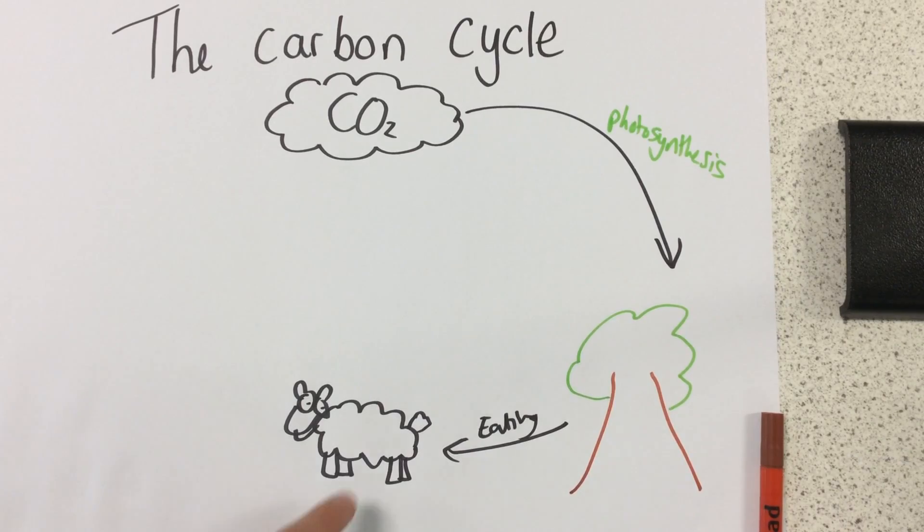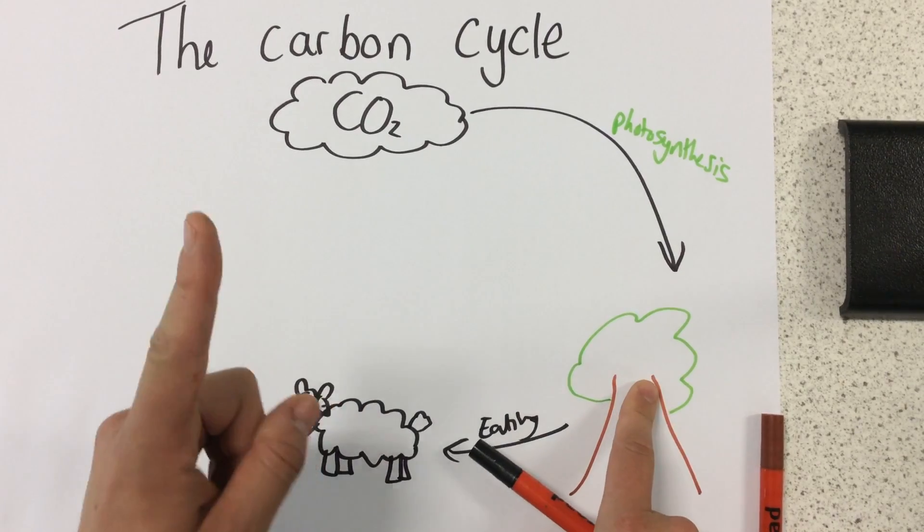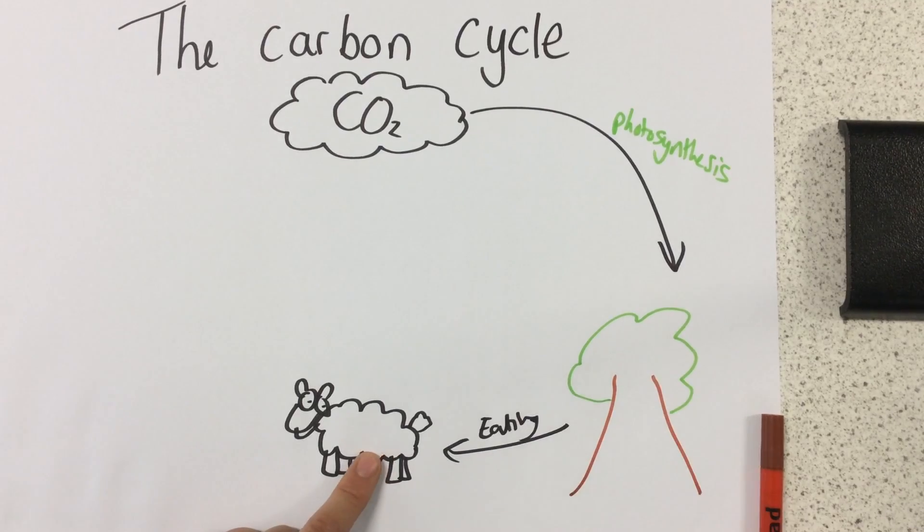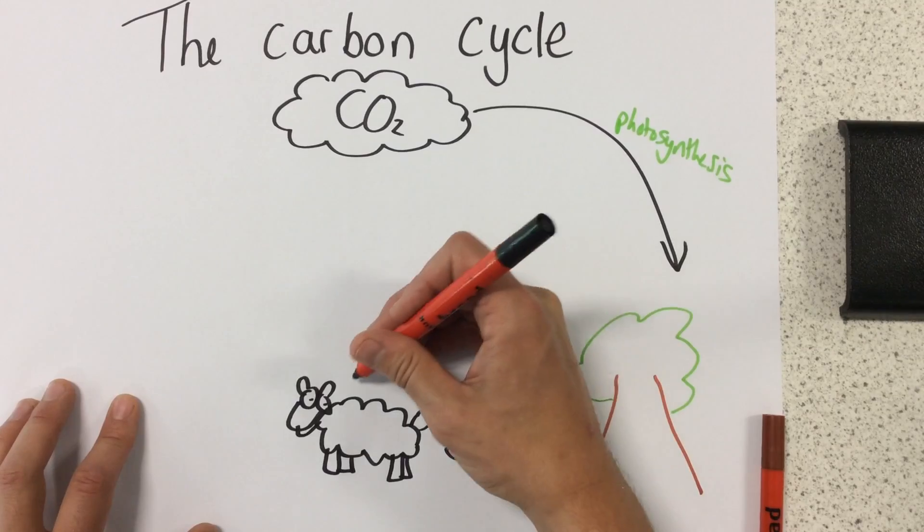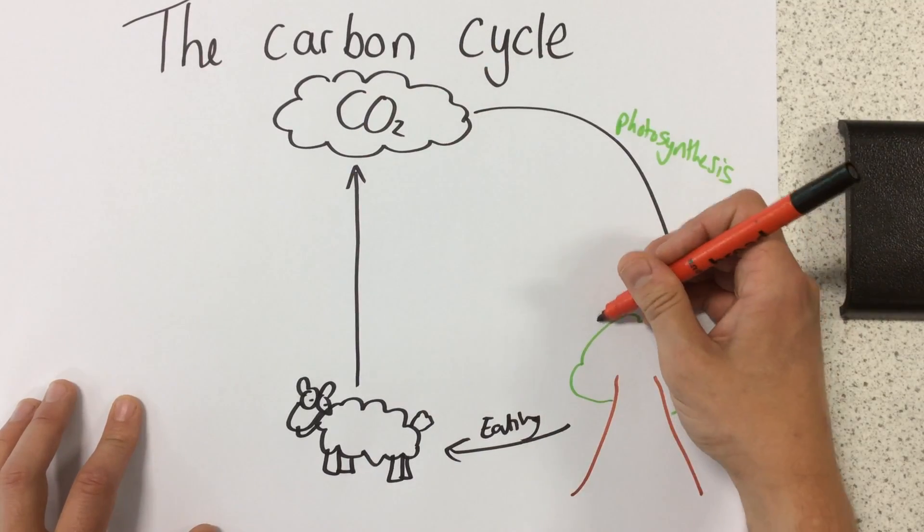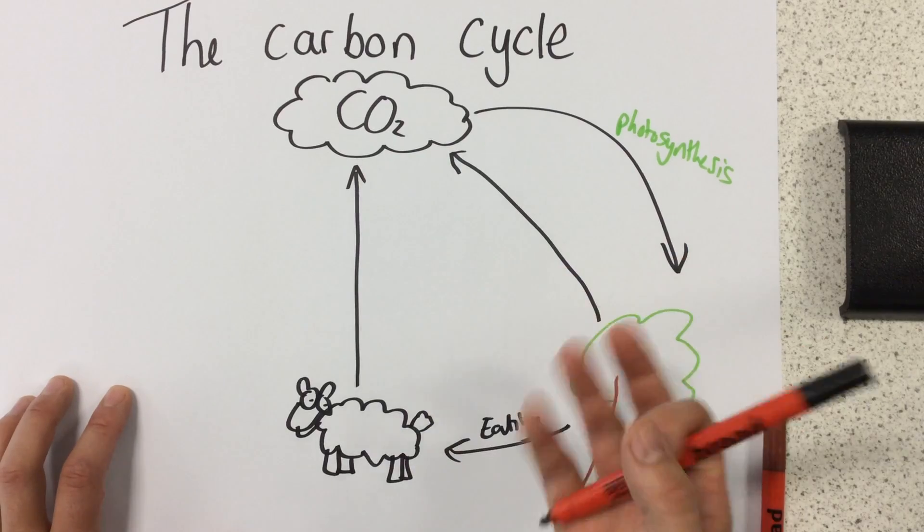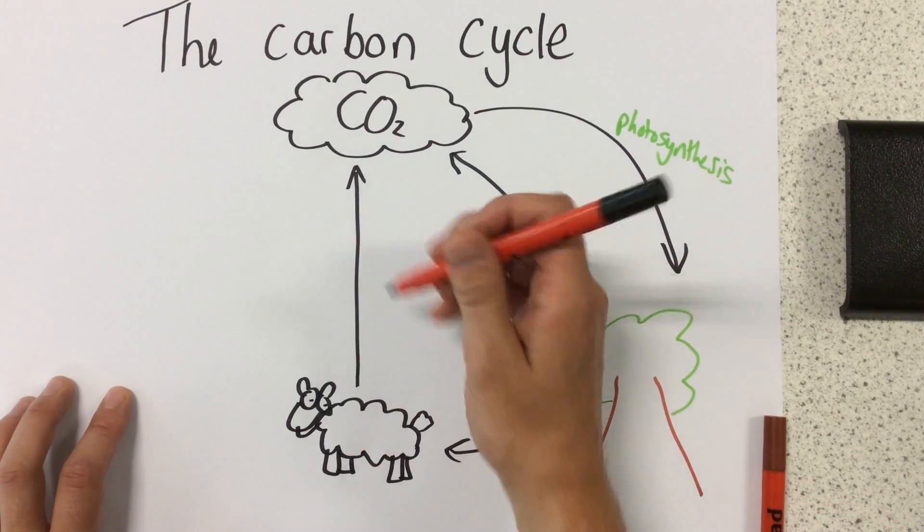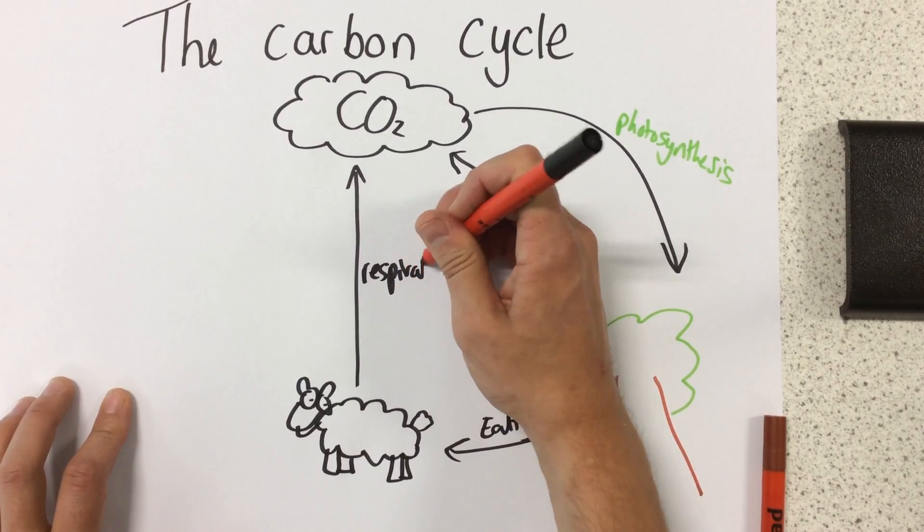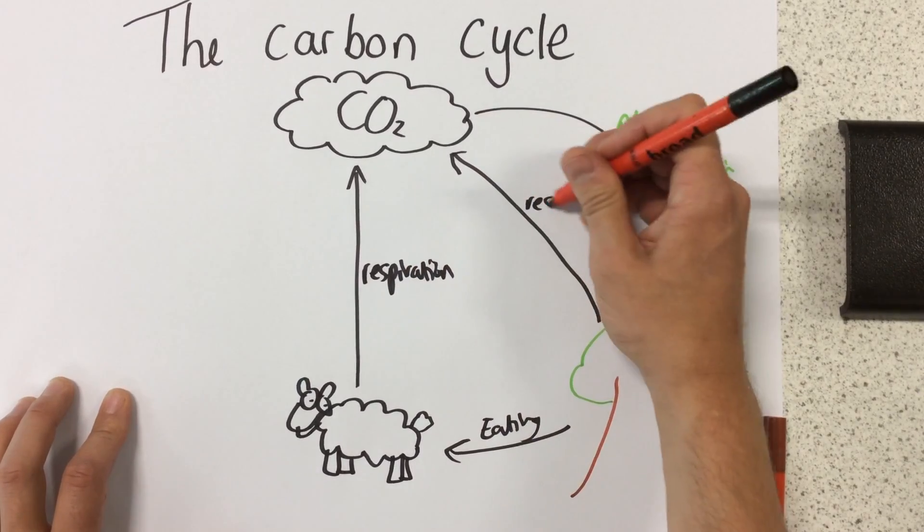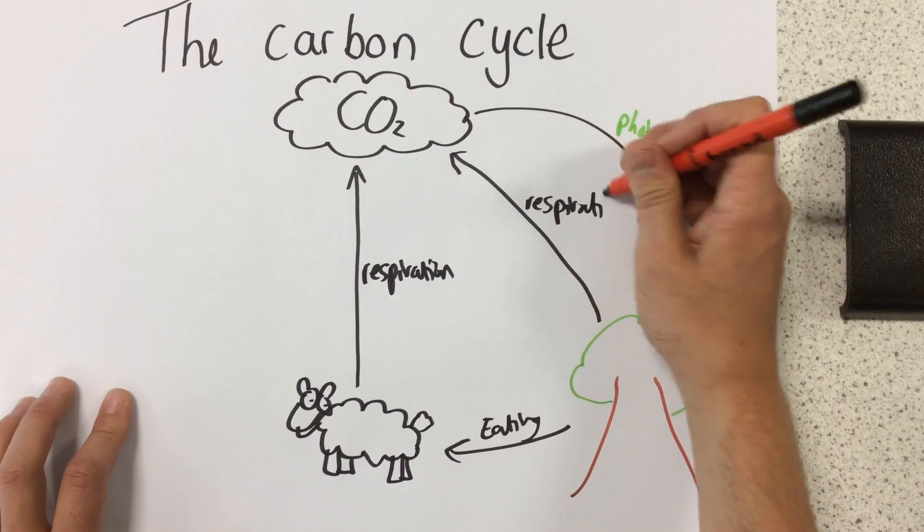Next up, we're going to think about what all living things do. One of the things that all living things do is they respire. Now what respiration is, remember, is the way that we get energy from our food. So it's a way of releasing energy from glucose. And one of the waste products of respiration is carbon dioxide.